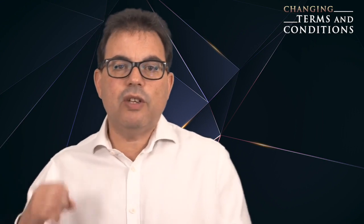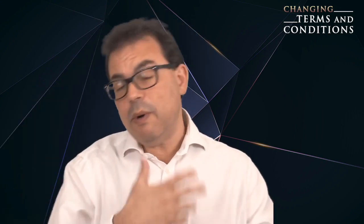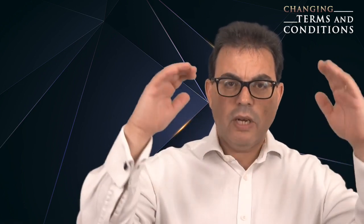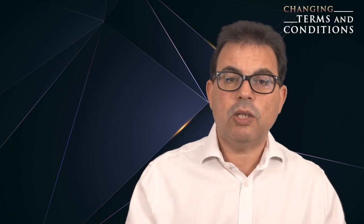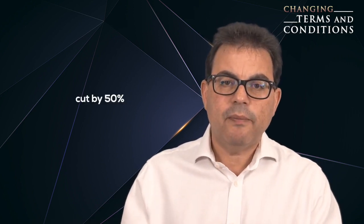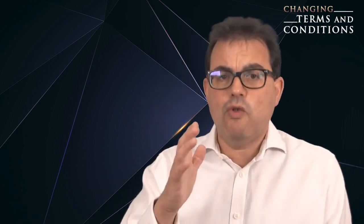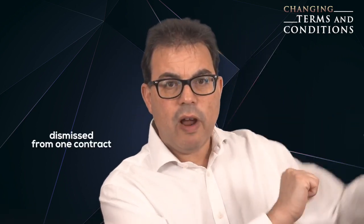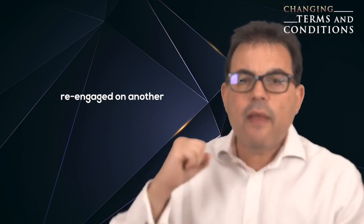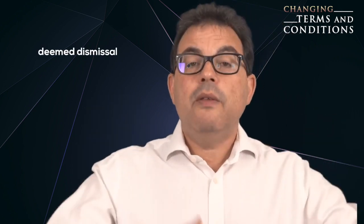Sometimes the contractual change is so substantial that the contract is effectively terminated. In a case called Hogg v Dover College, one of my favourite cases, the employee was unilaterally demoted from head of department, suffering significant loss of status, his pay was cut by 50%, and his old job was given to someone else. The EAT said the variation was so great that the employee had essentially been dismissed from one contract and reengaged on another. That meant he could bring an unfair dismissal claim despite remaining in employment. This is sometimes referred to as a deemed dismissal. It's a situation you as an employer should be keen to avoid.